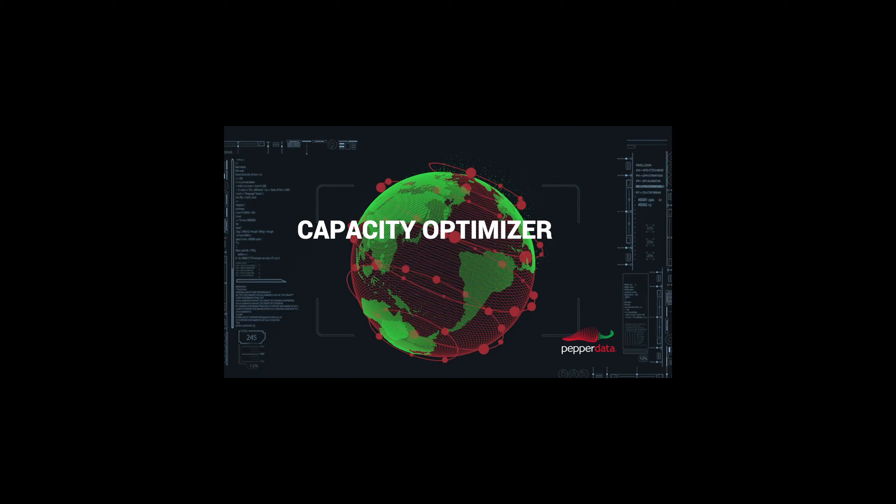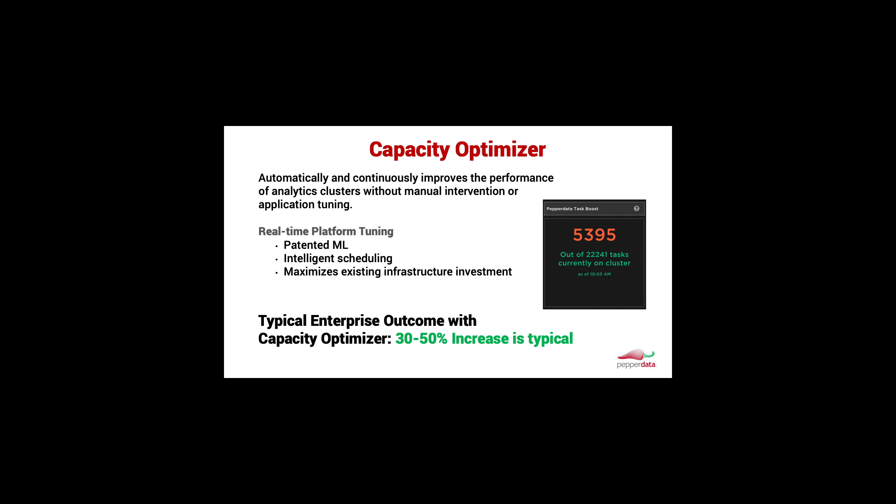Hi, this video is a quick overview of the Pepperdata Capacity Optimizer. Capacity Optimizer is an automated solution which continuously improves the performance of analytics clusters without manual intervention or application tuning.